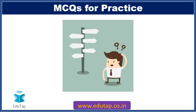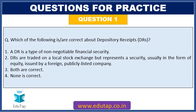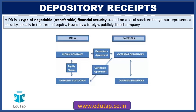Now let's discuss some important MCQs framed from this particular topic. The first question: which of the following is correct about depository receipts? Options are: (A) a depository receipt is a type of non-negotiable financial security; (B) depository receipts are traded on a local stock exchange but represent a security usually in the form of equity issued by a foreign publicly listed company; (C) both are correct; or (D) none is correct.